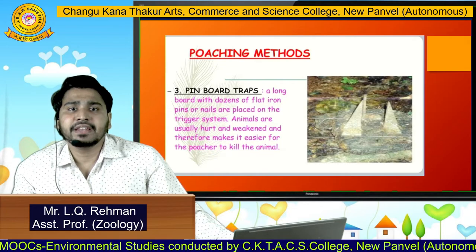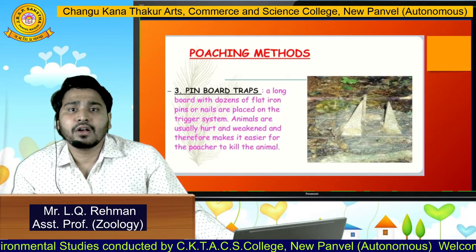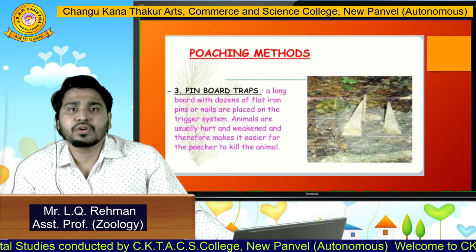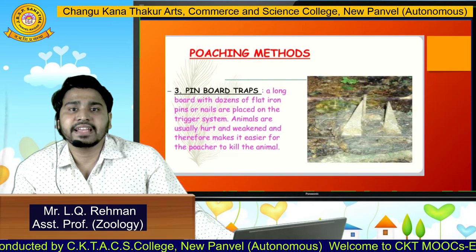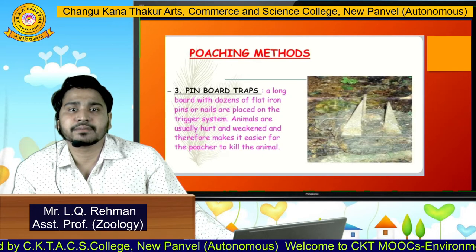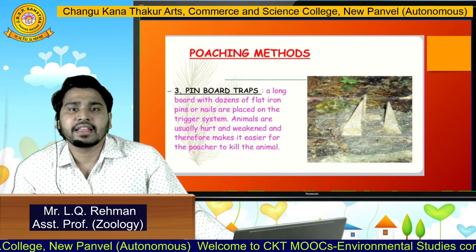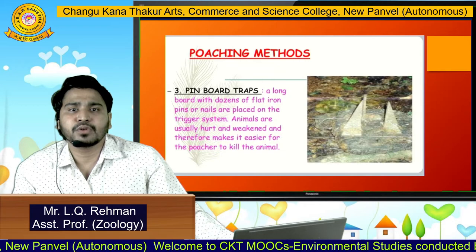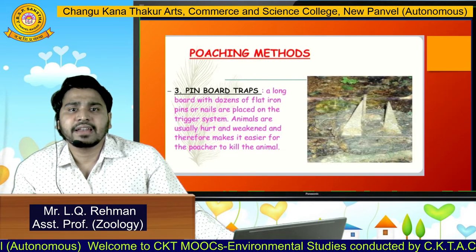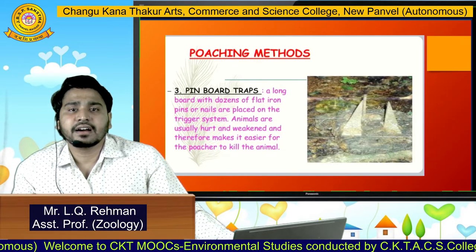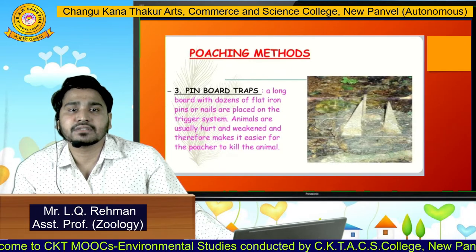Next is pin board traps. It is basically a long board with dozens of flat iron pins or nails placed on a trigger system. Animals usually get hurt and weakened, making it easier for the poacher to kill the animal, as they are slowed down by the nails.